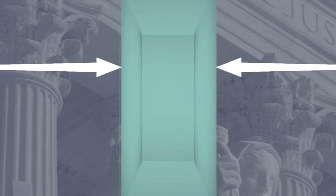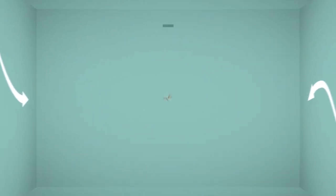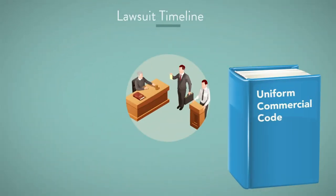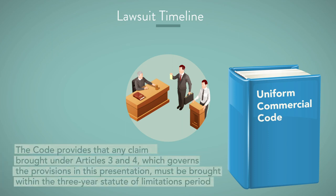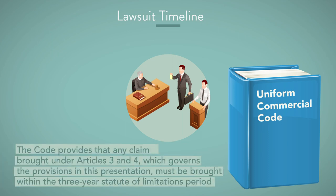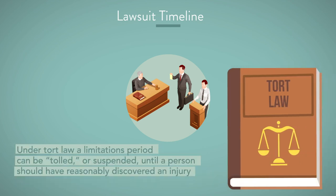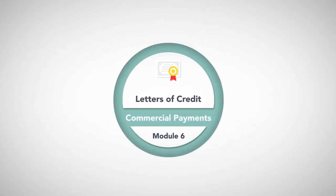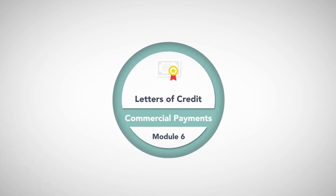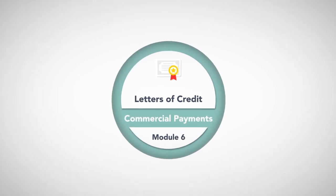While the customer must notify the bank within one year of any suspected forgery or alteration, it does not require that suit be brought within that time. The Code provides that any claim brought under Articles 3 and 4 must be brought within the three-year statute of limitations period. Under tort law, a limitations period can be tolled or suspended until a person should have reasonably discovered an injury. In our last module, we'll turn to letters of credit, which are issued between banks to guarantee payments under some conditions.